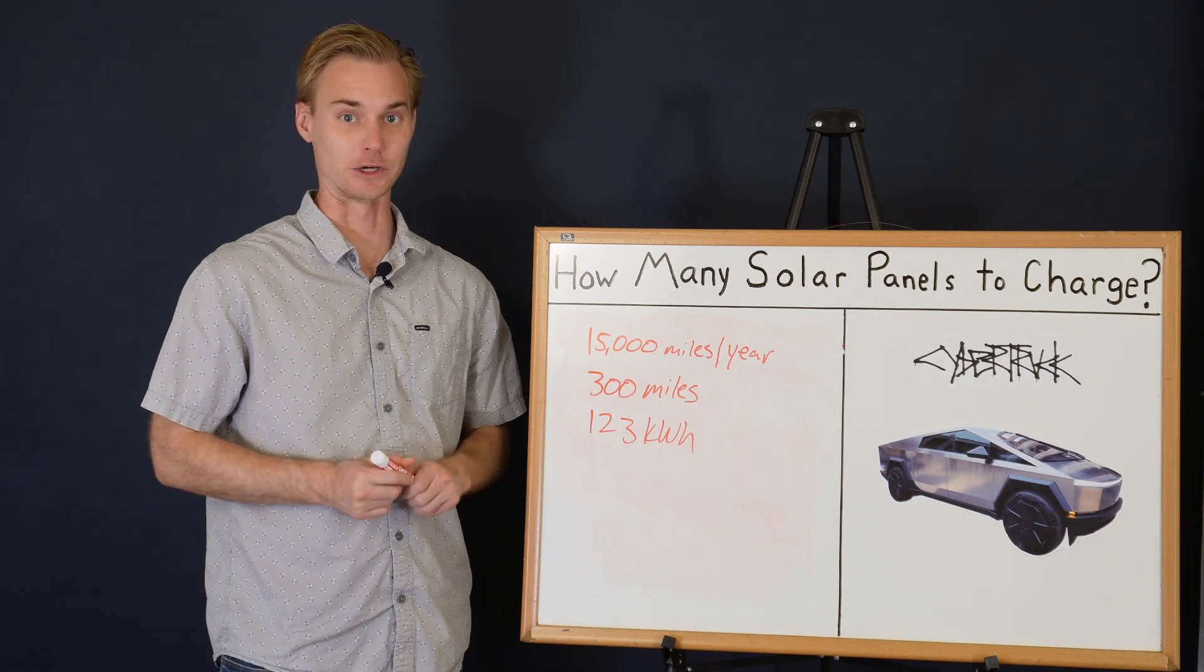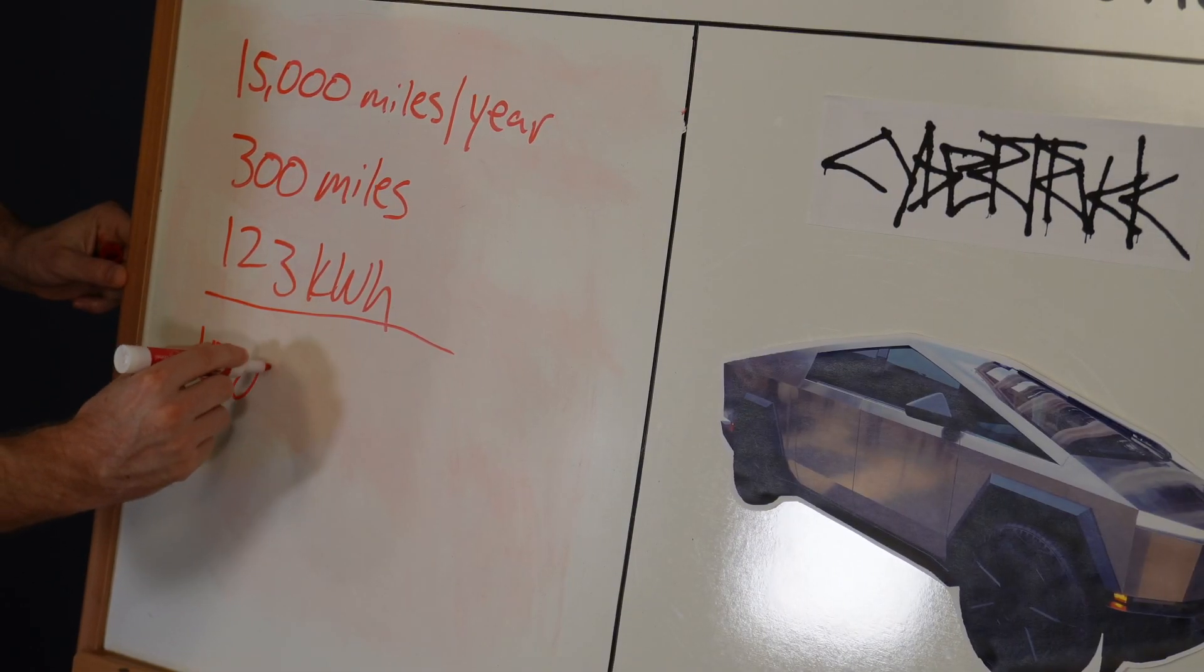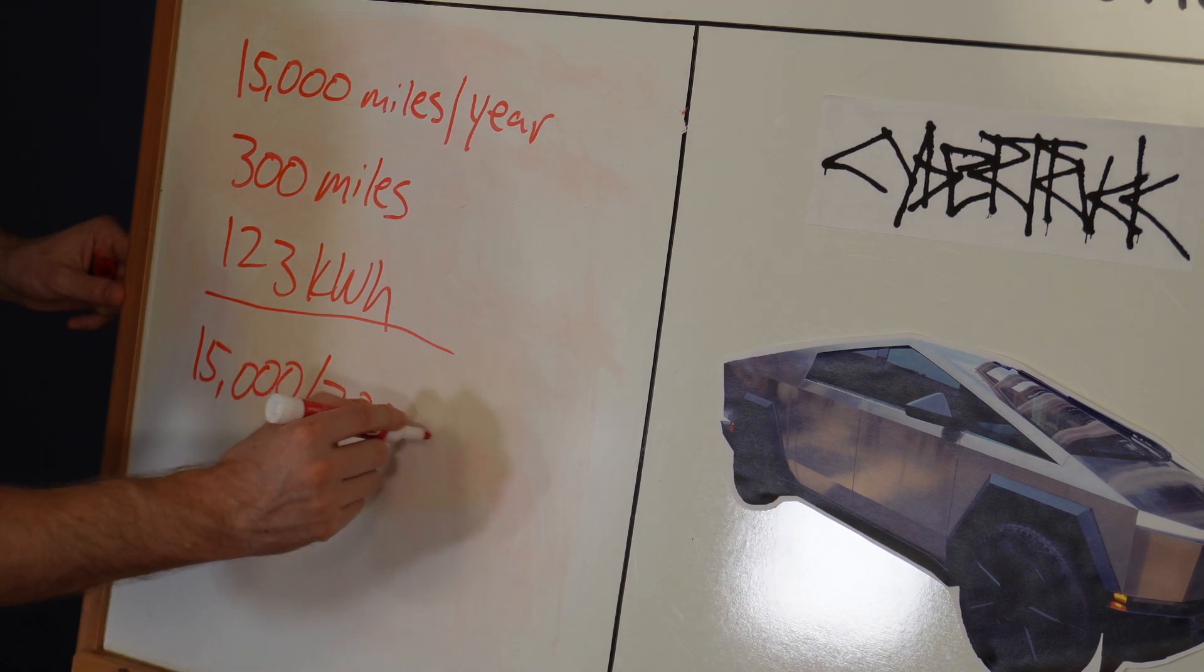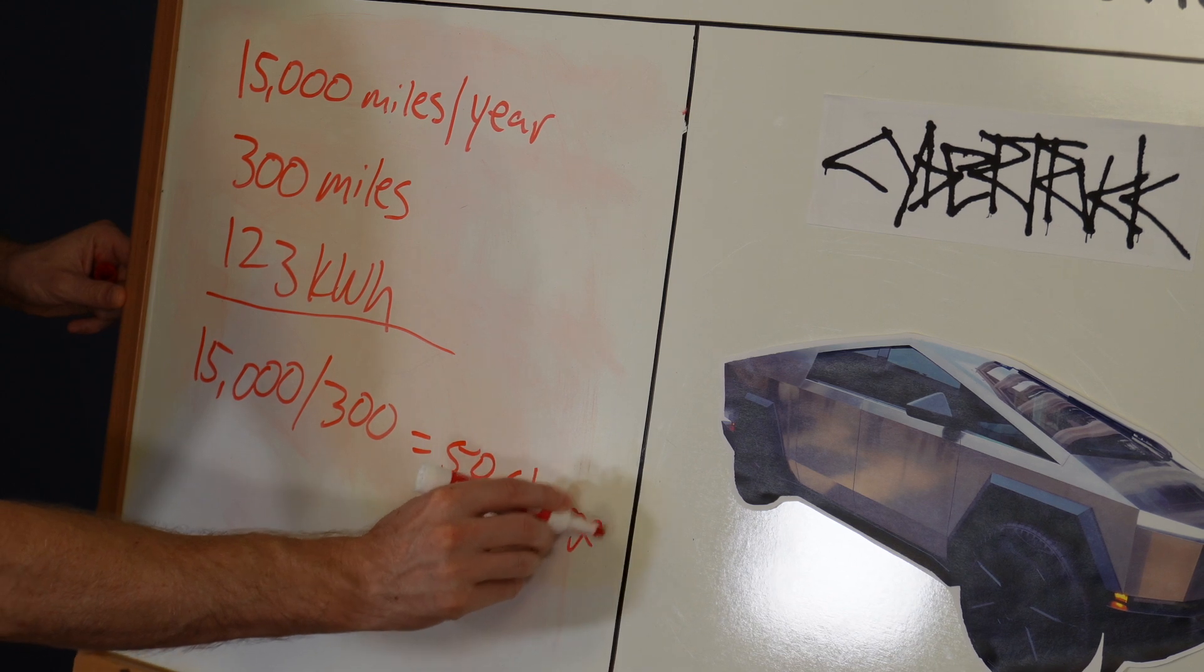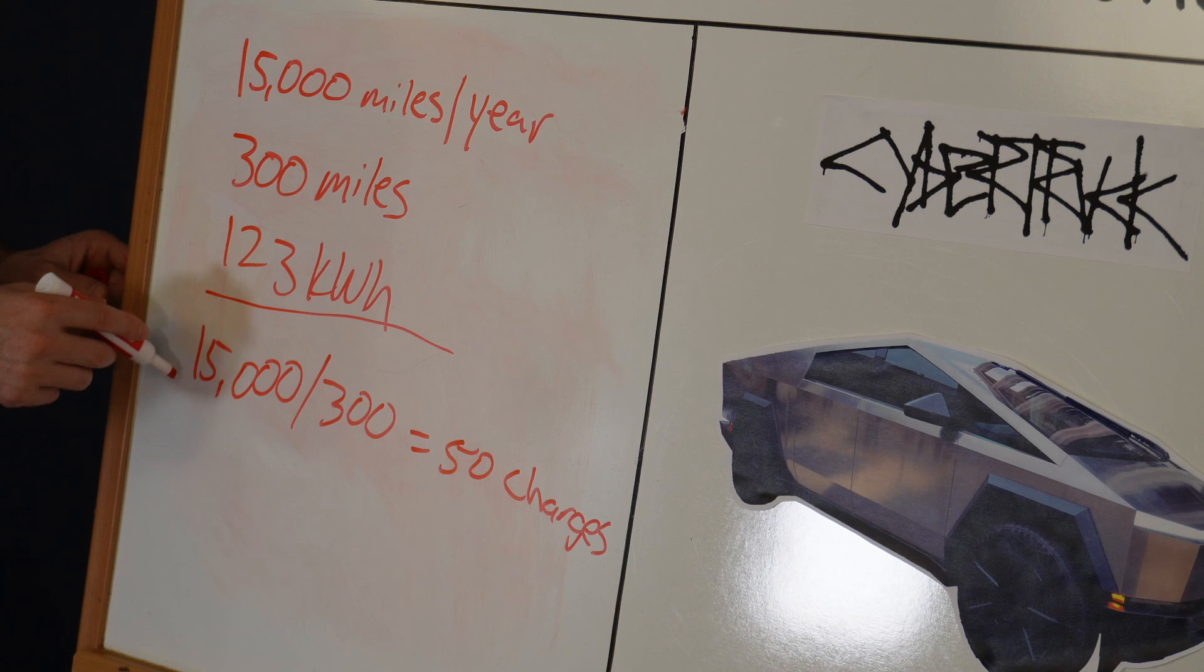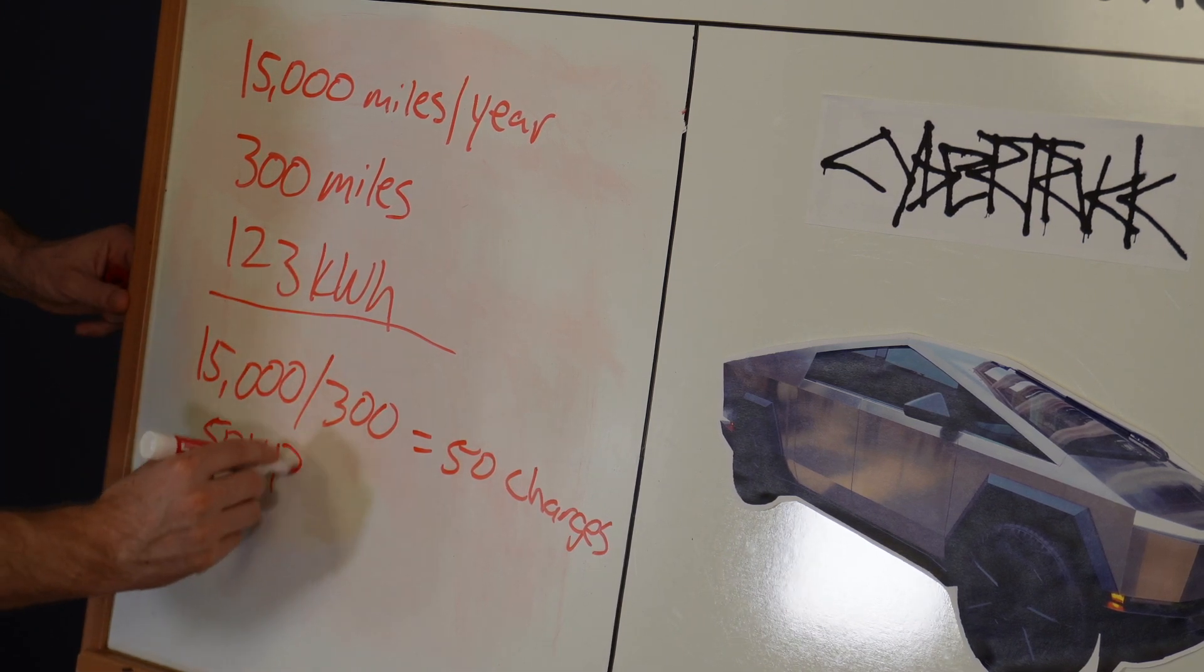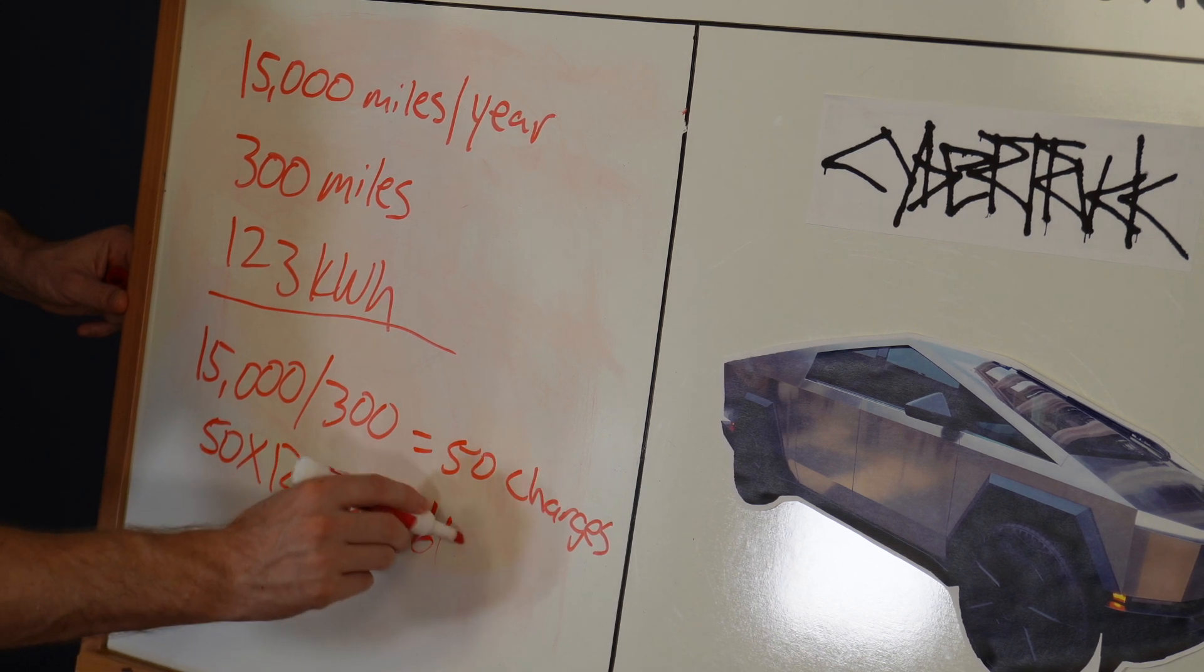To drive the 15,000 miles, it's pretty easy. All we're going to do is take the 15,000 miles a year and divide 300, because that's basically one full charge, and we're going to get 50 charges. That means we're going to need 50 charges to get us 15,000 miles, and then 50 charges times 123 kilowatt hours equals 6,150 kilowatt hours.